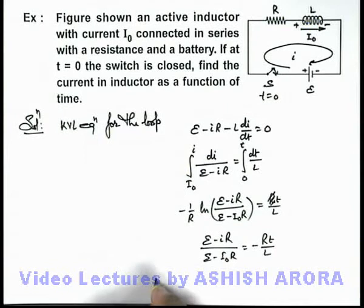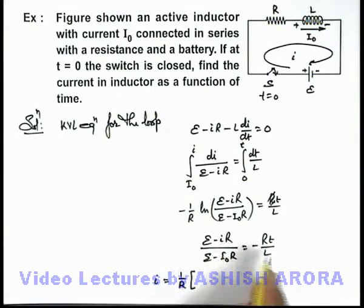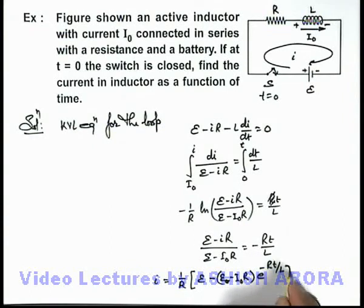Further on simplifying and solving it, we are getting the current as a function of time. This can be written as: on simplifying we are getting 1 by R, and then it will be E minus E minus i-not R, into e to power minus Rt by L. That will be the answer to this problem.